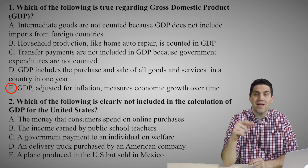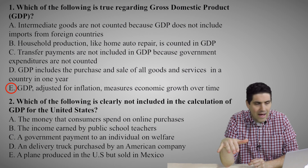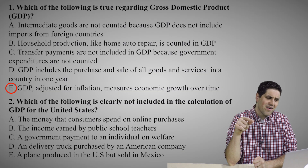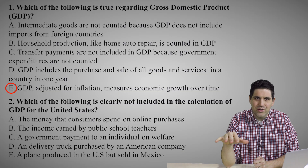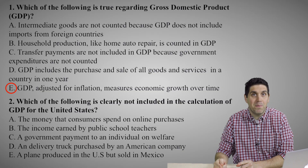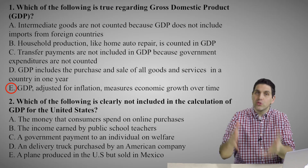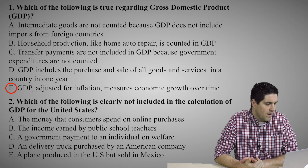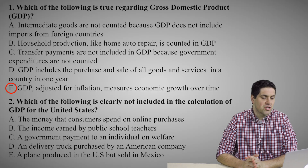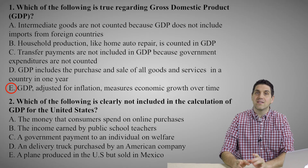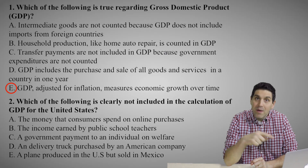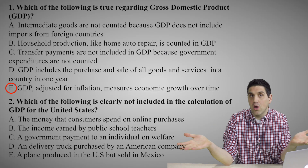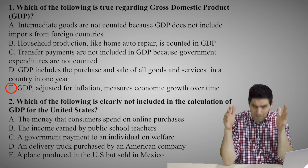B — household production like home auto repair is counted. No, it's not. C — transfer payments are not included, that's true, but the reason given is that government expenditures are not counted, which is not true. Government spending does count towards GDP, but not all of it — Social Security and other transfer payments don't count. D — GDP includes the sale of all goods and services. Not all: intermediate goods don't count, and the sale of used goods don't count. The right answer is E.